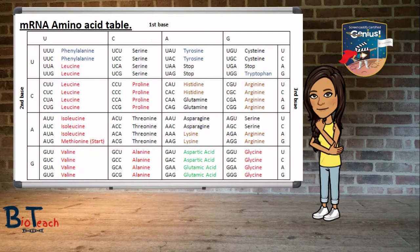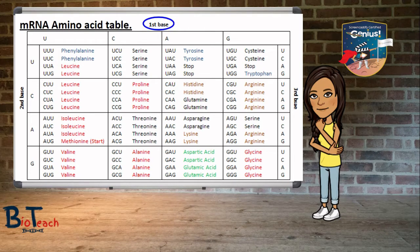The genetic code is summarised in an mRNA amino acid table, as you can see on your screen now, which identifies the amino acid encoded by each mRNA codon. To work out which amino acid is coded for by a codon, you would look for the first letter of the codon in the columns — this is the first base. Then you would look for the intersecting row, which has the second base, and then you'd look for the third intersection, which is the third base.